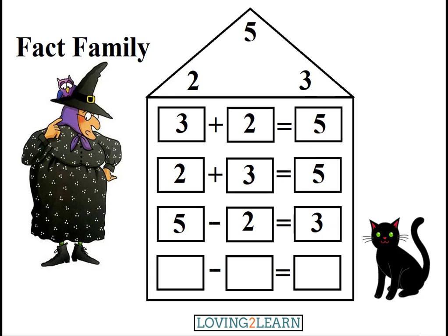Mildred says, get another 5: 5 minus 3 equals what? 2! You have the hang of this! We count backwards from 5 by 3: 5, 4, 3, 2. Or, we know that 5 minus 3 equals 2.